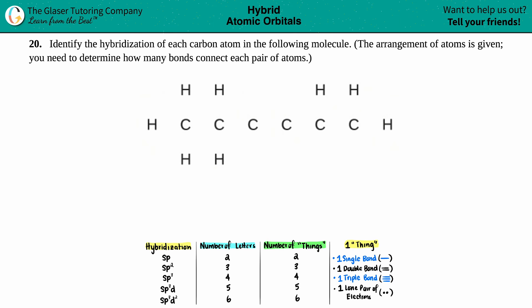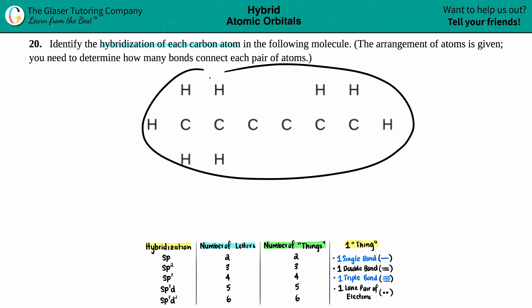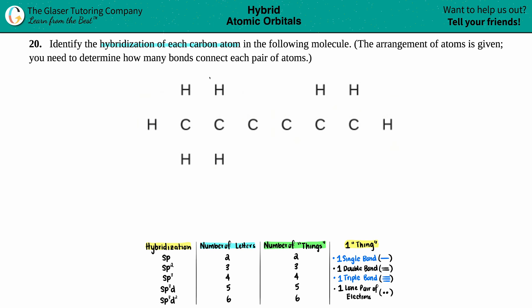Number 20: identify the hybridization of each carbon atom in the following molecule, given the arrangement of atoms. You need to determine how many bonds connect each pair of atoms. They give us the skeleton of the compound and we have to draw the bonds. The easiest thing is to remember that hydrogen always wants to have only one bond, so we'll start with the hydrogens.